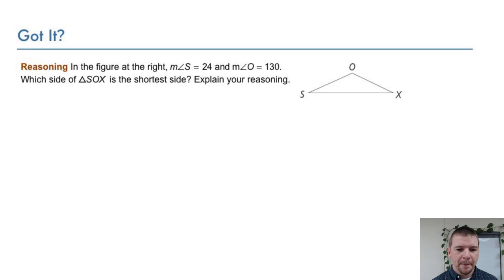Your turn. A reasoning item. In the figure at the right, the measure of angle S is 24, the measure of angle O is 130. Which side of triangle SOX is the shortest side? Explain your reasoning.